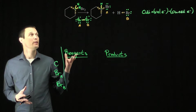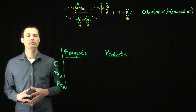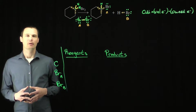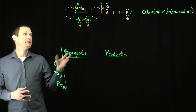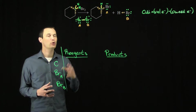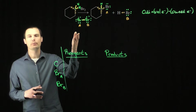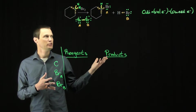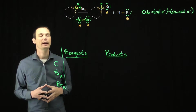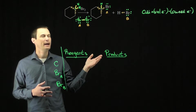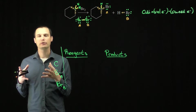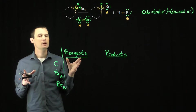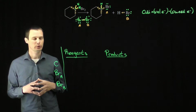This question asks us to determine whether or not this reaction is a redox reaction and to prove that using oxidation numbers. Our calculation for oxidation number is the number of valence electrons the atom wants in its neutral ground state minus the number of electrons it owns in this particular structure.